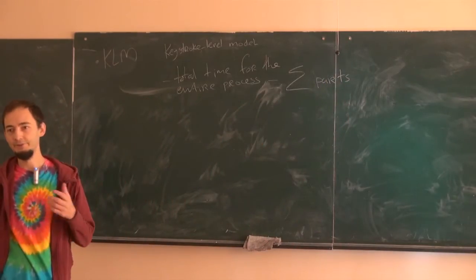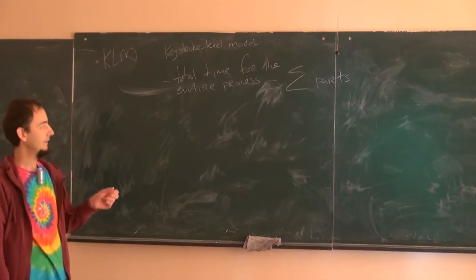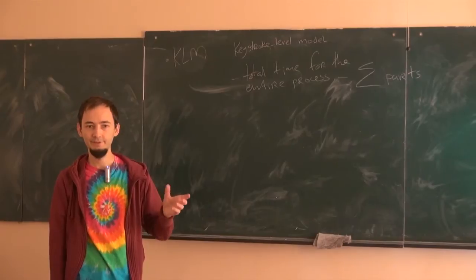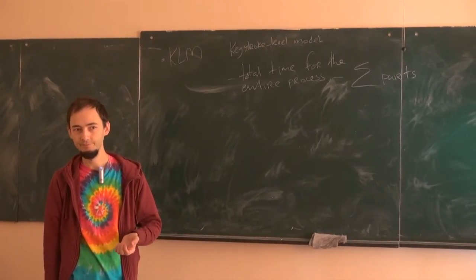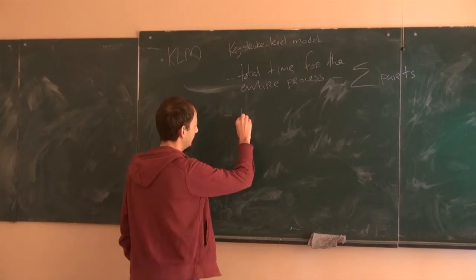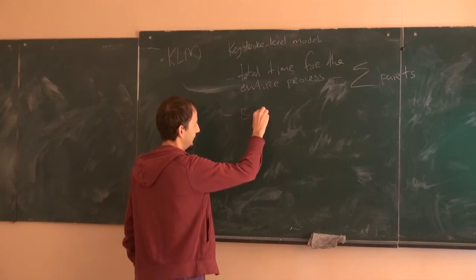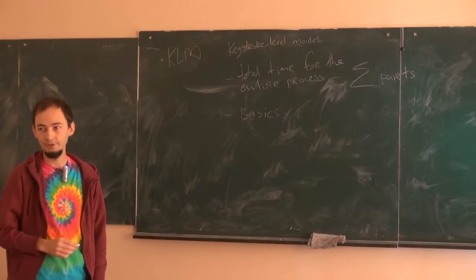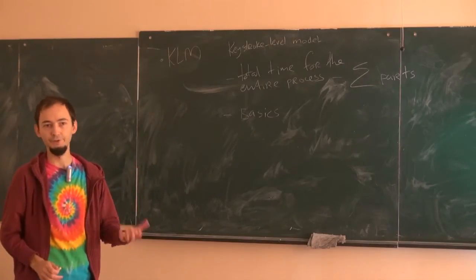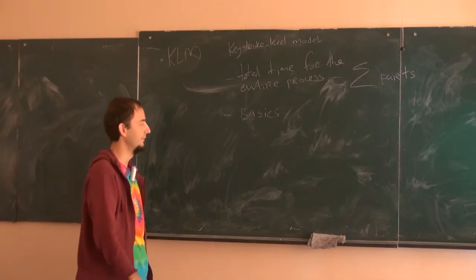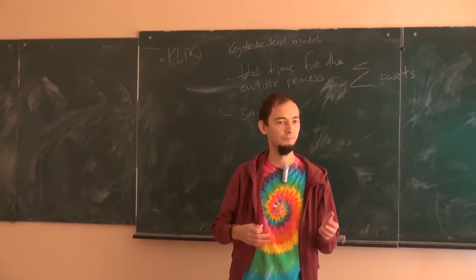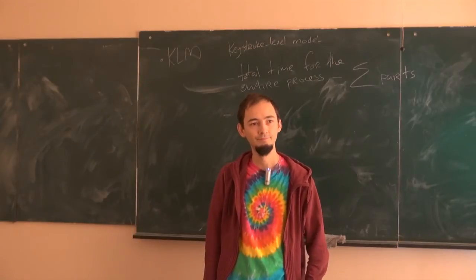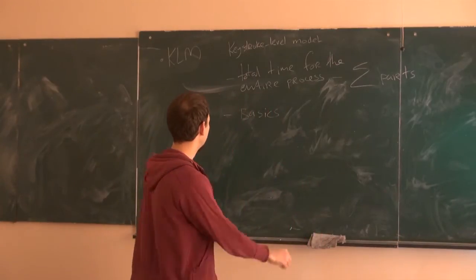When you interact with an interface, it boils down to a number of primitive operations. Imagine that you are using a desktop computer and you need to write an email. What kinds of things will you do to make it happen? Students suggest: move the mouse, click.